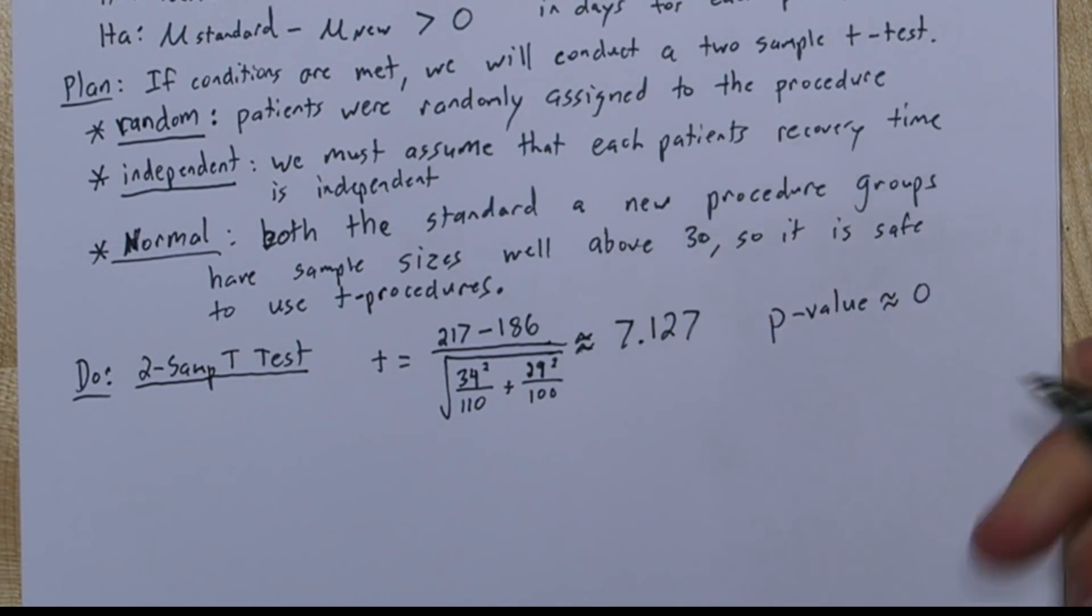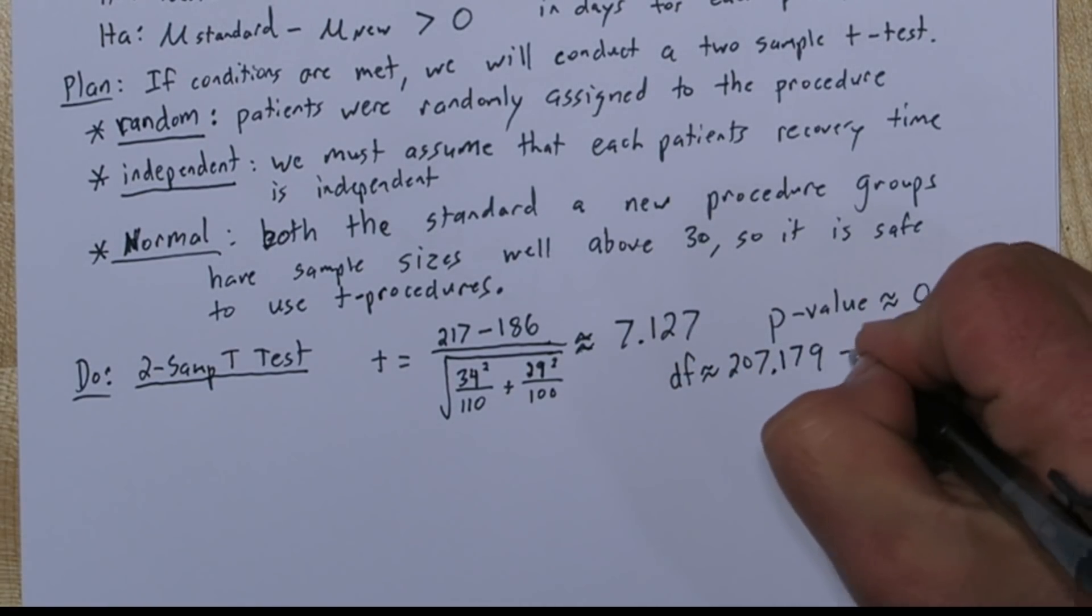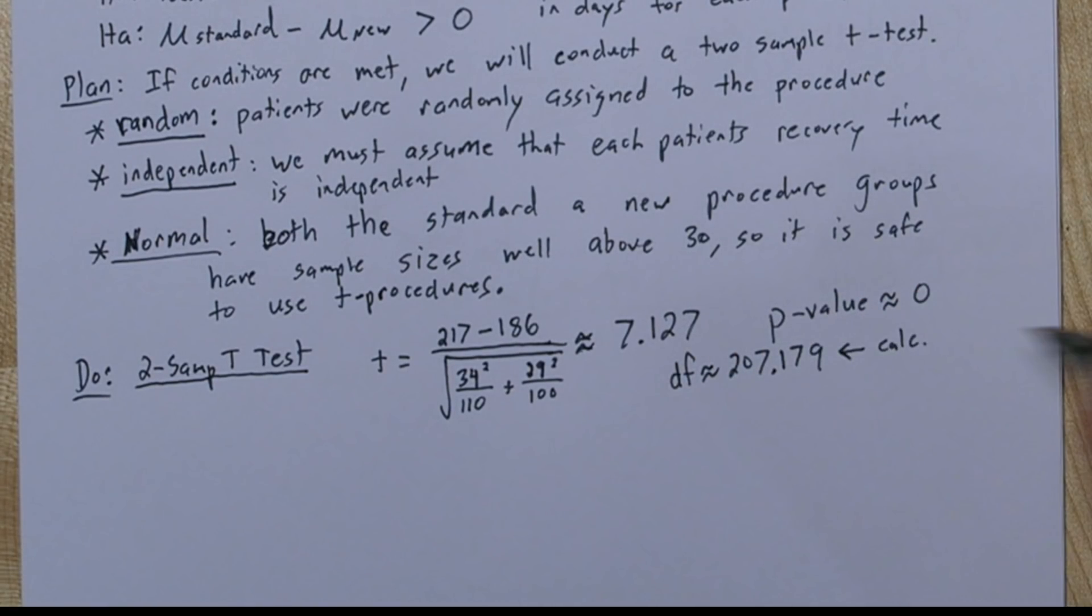And I'm going to put degrees of freedom was approximately equal to 207.179. I'll draw a little arrow and write calc so they know I found it on the calculator.